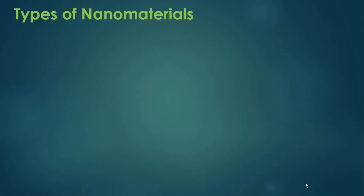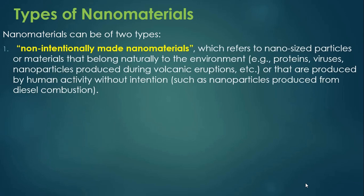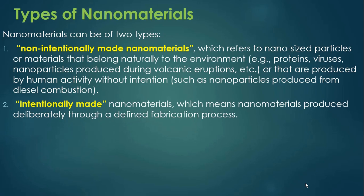Nanomaterials can be classified into two types. First, non-intentionally made nanomaterials — nano-sized particles that naturally belong to the environment, like proteins, viruses, nanoparticles produced during volcanic eruptions, or those produced by human activity without intention, such as nanoparticles from diesel combustion. Second, intentionally made nanomaterials — those produced deliberately through a defined fabrication process. The definition of nanotechnologies is generally limited to intentionally made nanomaterials.